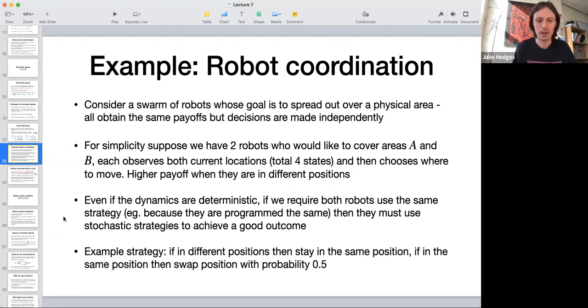For example, if we require that both robots, or in general all of the population of robots, use exactly the same strategy—so that strategy might be pre-programmed—but then the random decisions that they make by following that strategy happen locally.